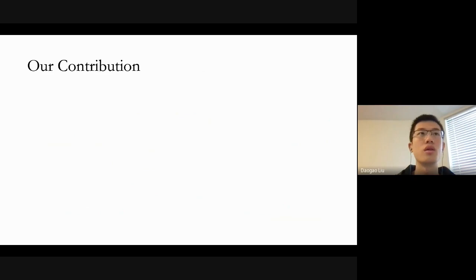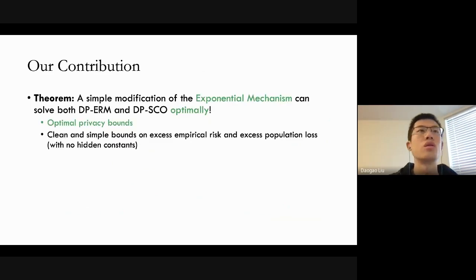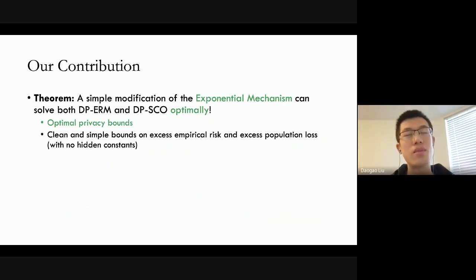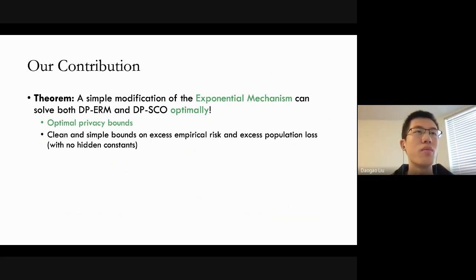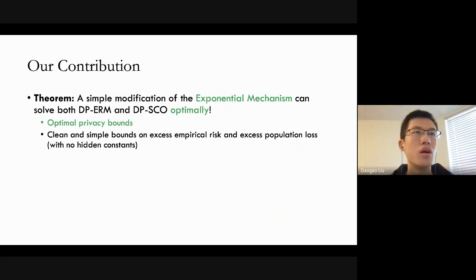But there are still open problems. The noisy SGD variant for optimal DPSCO is quite complicated. Moreover, the same algorithm doesn't work for both DPERM and DPSCO: the optimal DPSCO algorithm uses DPERM as a black box and iteratively changes the domain, step size, and sample size. So if you hope to get a good empirical risk by current analysis, you may not get a good population loss and vice versa. This motivates us to generalize our regularized mechanism to the DPSCO setting.